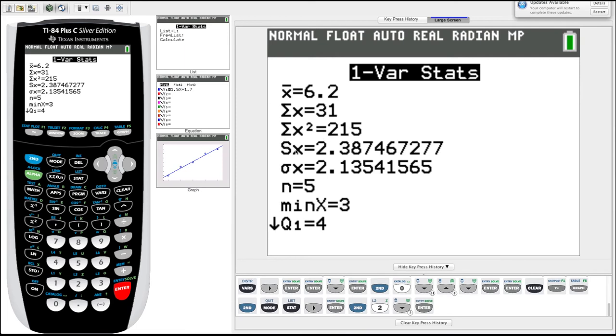SX is our sample standard deviation. And sigma X, lowercase sigma, the Greek sigma, is our population standard deviation. N equals five tells us how many data points are in that list, which we entered five, so that's good.